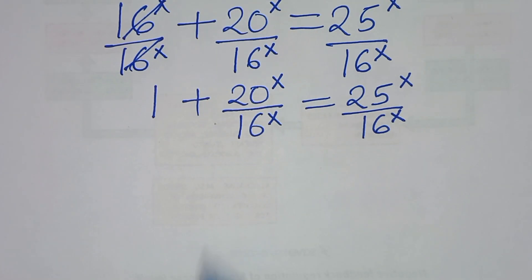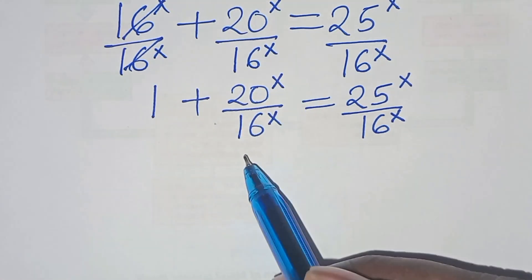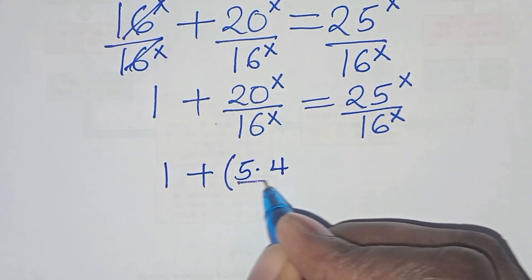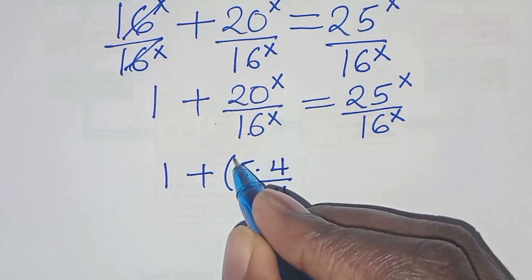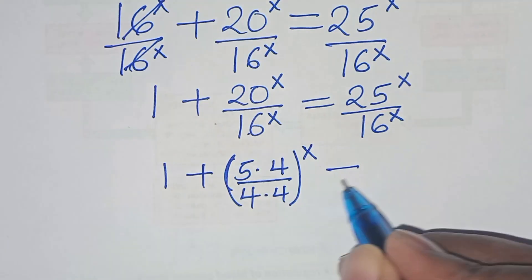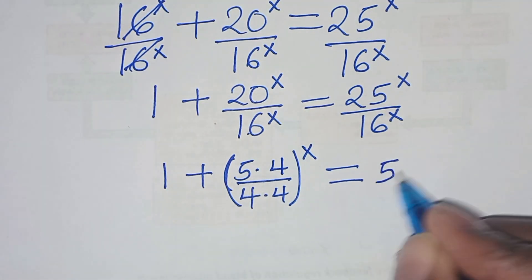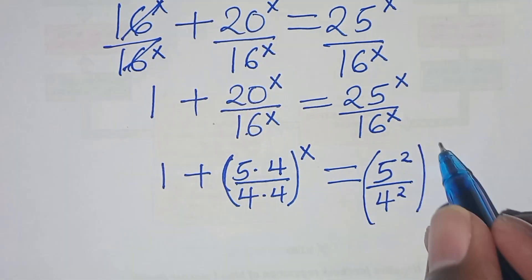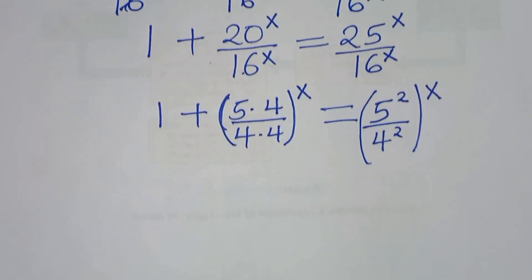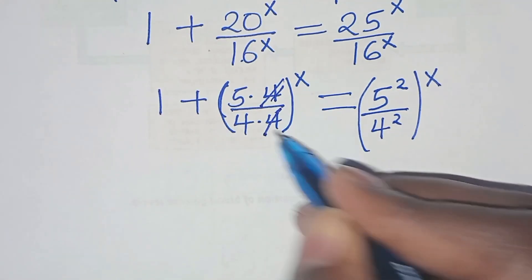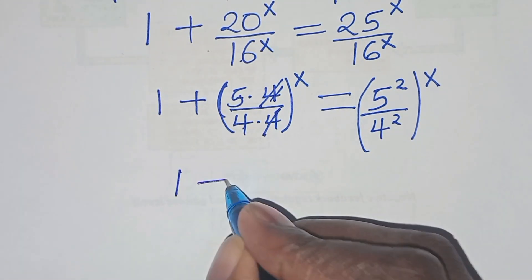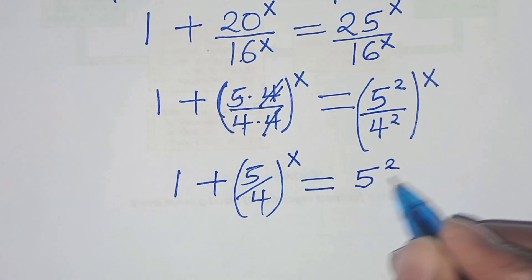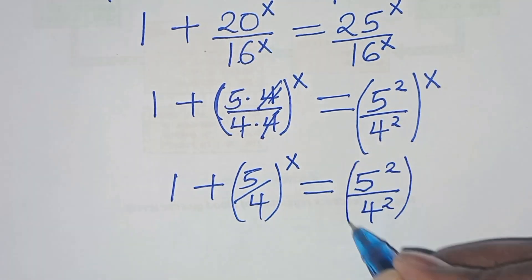The next step is to express 20 to power x over 16 to power x. We have 1 plus — 20 is the same as 5 times 4, divided by 16 which is 4 times 4 — all raised to power x. This equals 25, which we can express as 5 to power 2, over 16 which is 4 to power 2, all raised to power x.